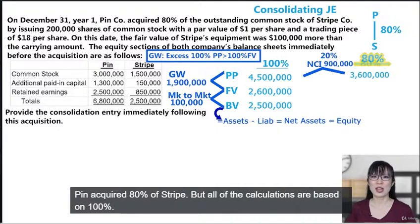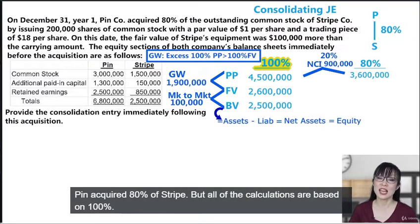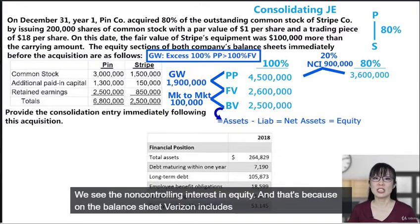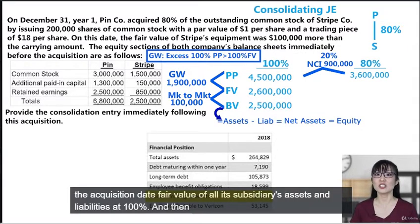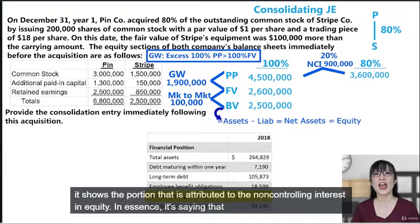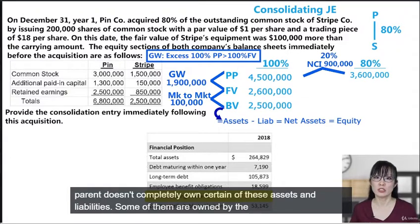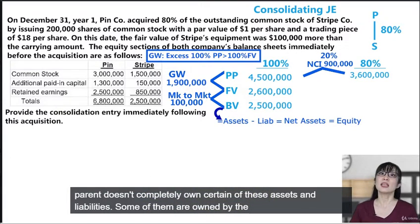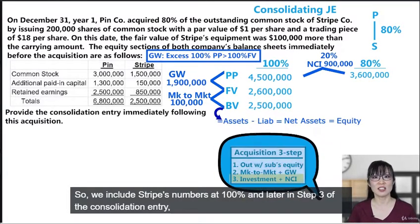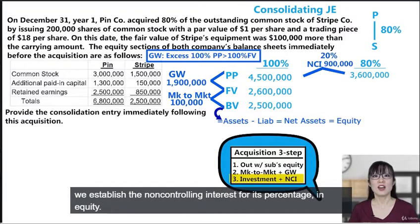Pin acquired 80% of Stripe, but all calculations are based on 100% — that might seem odd. Looking at a Verizon balance sheet excerpt, we see non-controlling interest in equity, because Verizon includes the acquisition-date fair value of all its subsidiaries' assets and liabilities at 100%, then shows the portion attributed to the non-controlling interest in equity. In essence, it's saying the parent doesn't completely own certain assets and liabilities — some are owned by the non-controlling interest. So we include Stripe's numbers at 100%, and in step 3 of the consolidation entry we establish the non-controlling interest for its percentage in equity.